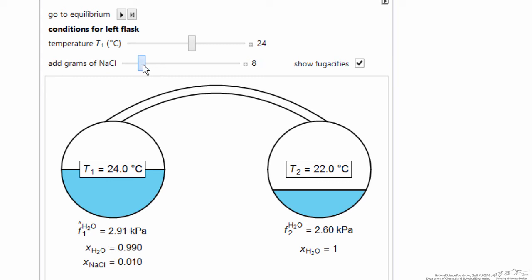Reset. We can change the number of grams we add, or we can change the temperature, and that determines whether the transport is from the left to the right, or from the right to the left.